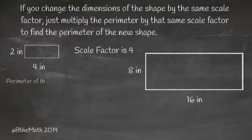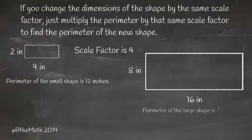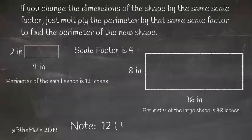Our perimeter of the first one is 12 inches. Our perimeter of the second one is 48 inches. Notice 12 times 4 is 48 inches.